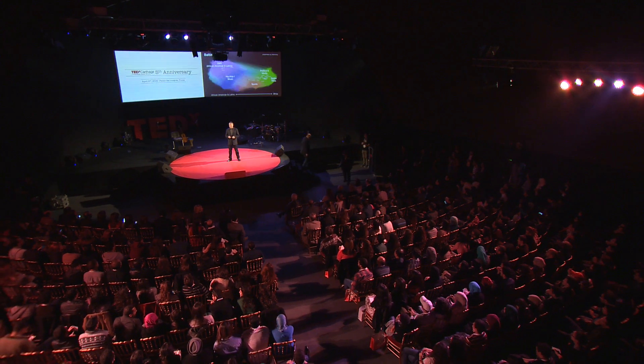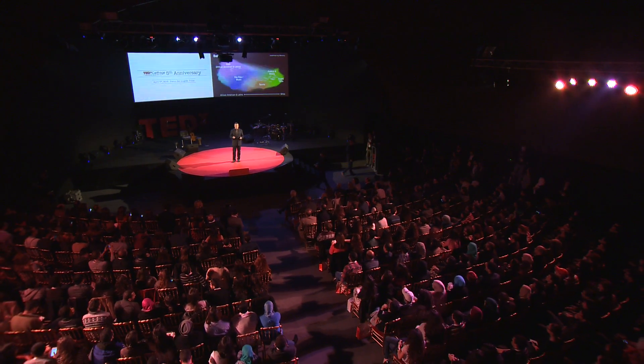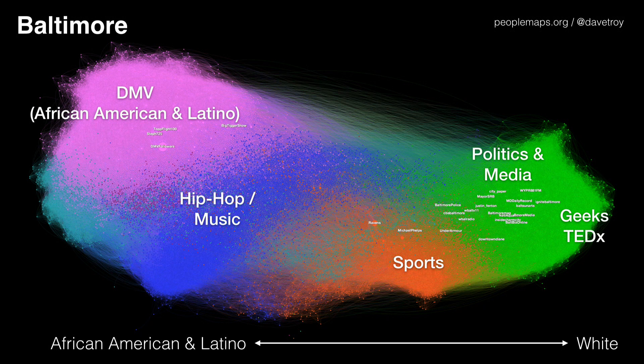When we think about mapping cities, we might think about buildings, roads, streets, or maybe the settlement narrative that led to their creation. But today I want to show you a different way to map a city — a map of its people.